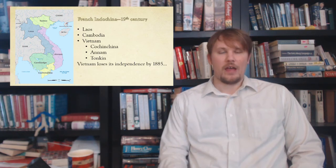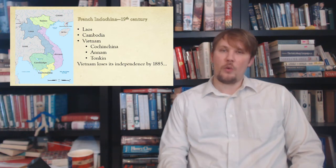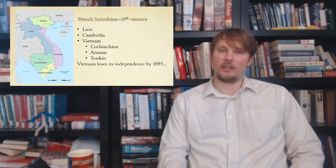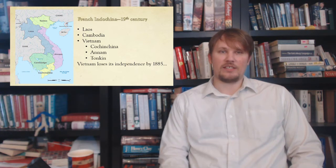To understand the roots of the Vietnam War, we go back to the 19th century. About the time America was engaged in its Civil War, France was taking control of Indochina, which consisted of Laos, Cambodia, and Vietnam. Vietnam was divided into three parts: Cochinchina, Annam, and Tonkin. In the 1860s France had a strong foothold in Indochina, and by 1885 Vietnam had lost its independence.